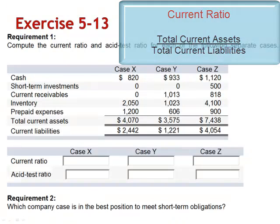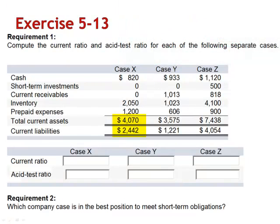For case X, we take total current assets, 4,070, divided by total current liabilities, 2,442. The ratio is 1.67. The company has $1.67 in current assets for every $1 in current liabilities.